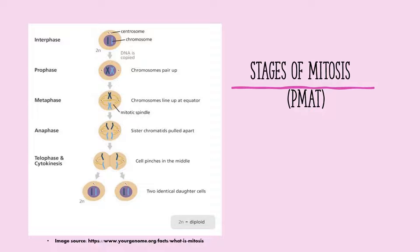During prophase, the chromosomes pair up. During metaphase, chromosomes line up at the equator. During anaphase, sister chromatids are pulled apart. And during telophase and cytokinesis, the cell pinches in the middle, resulting in two identical daughter cells.